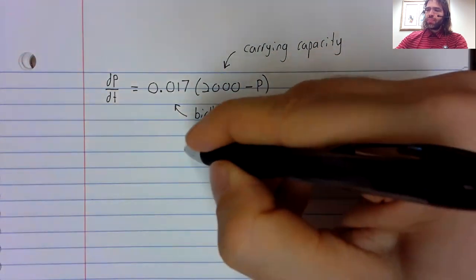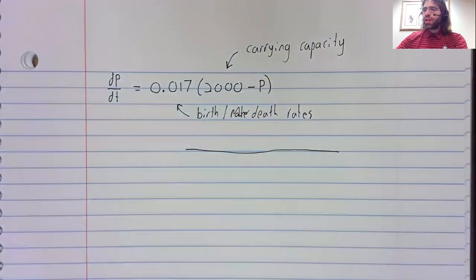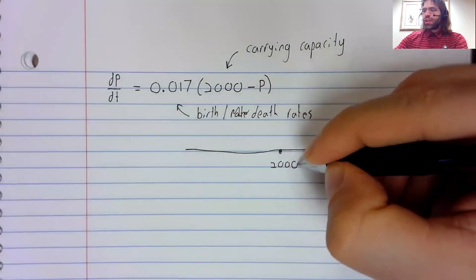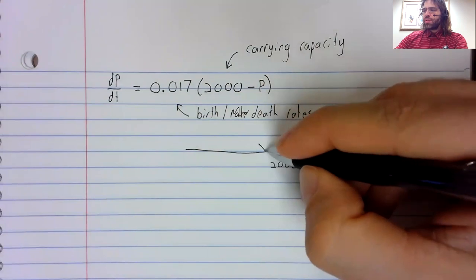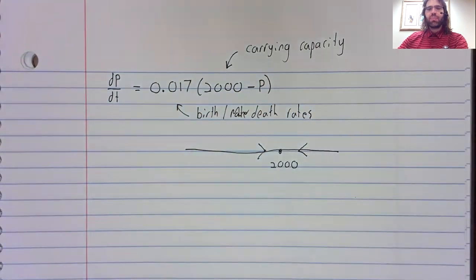And when we construct our number line, here's 2000. We always approach this carrying capacity.